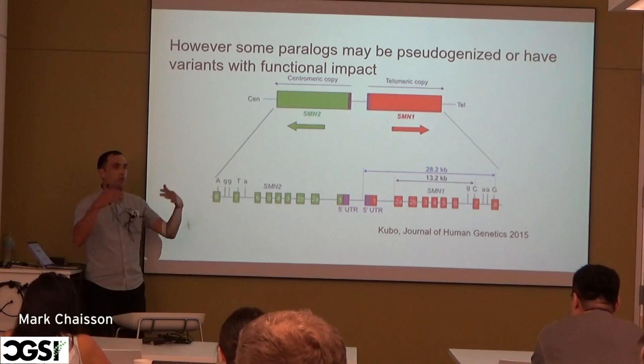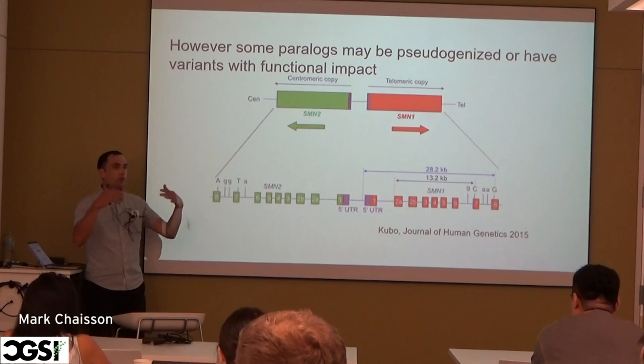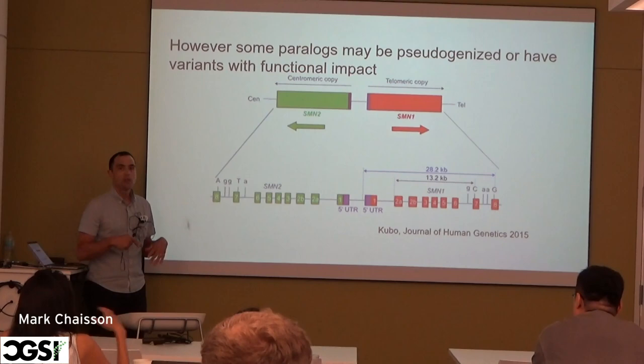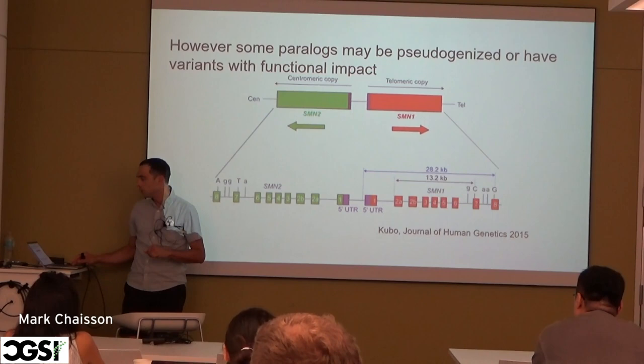In the case of SMN, this single SNP results in essentially getting rid of most of the expression of that particular gene. If you take SMN1 and it gets converted into SMN2 through gene conversion — essentially a copy-paste-over genomic modification — you can lose expression of both copies, and that results in a disease called spinal muscular atrophy.